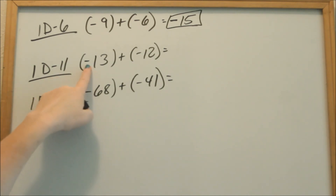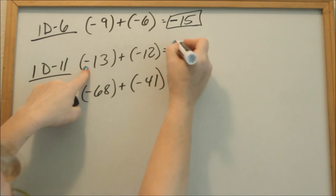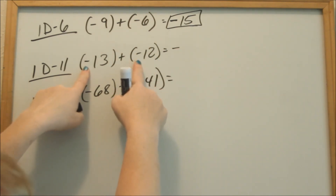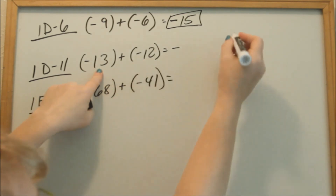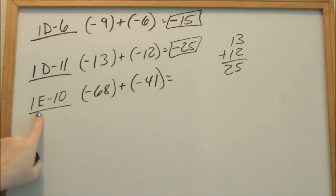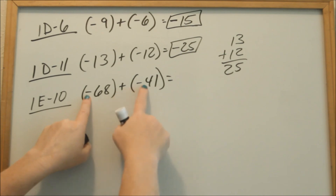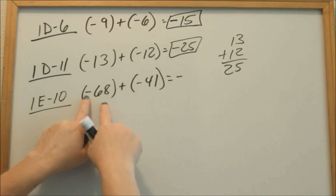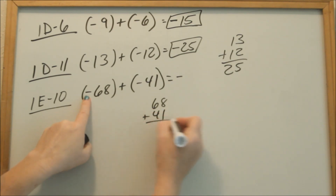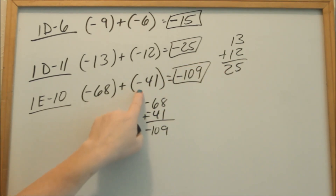Look at D11 — I owe plus I owe more, so I'm still going to owe in the end. To find the total I owe, I add the two numbers: 13 plus 12 is 25, so I owe 25. On page E number 10, I owe 68 plus I owe 41. Since I owe and I owe more, I'll still owe in the end. 8 plus 1 is 9, 6 and 4 is 10, so I owe 109 altogether.